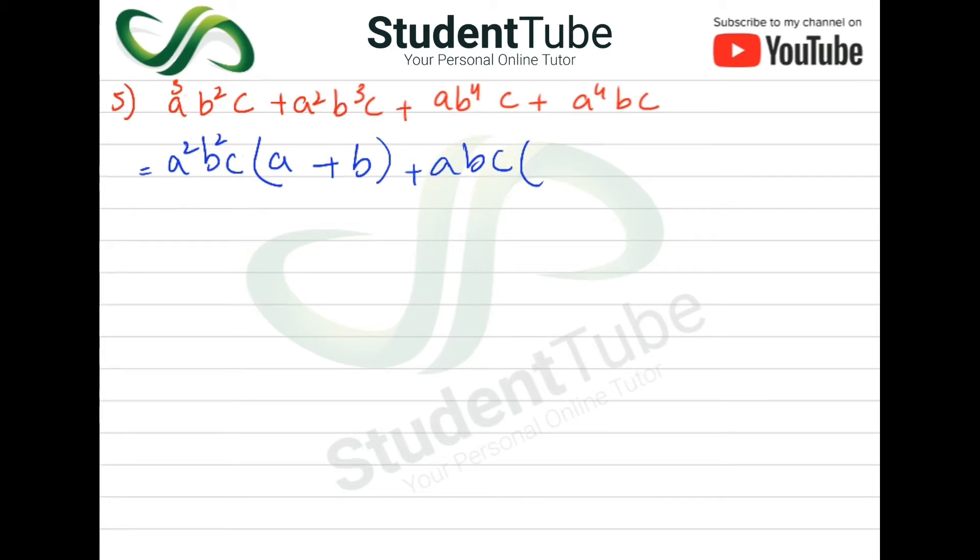so b is above 4 and above 1 is 1, means that how many will come inside? 3 will come, so here b³ comes. Then plus, then here a is 4 and above 1, so here a³ will come, so b and c will not come.